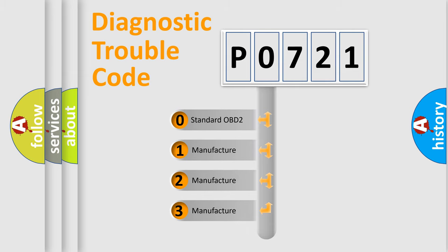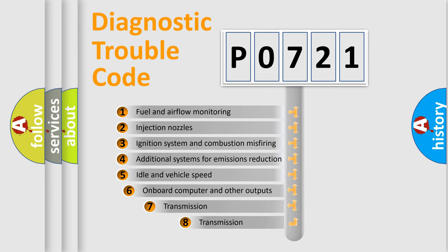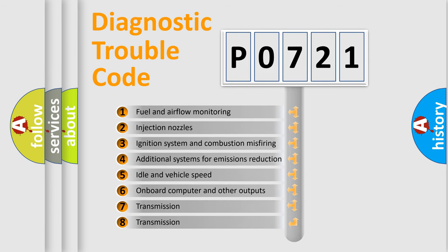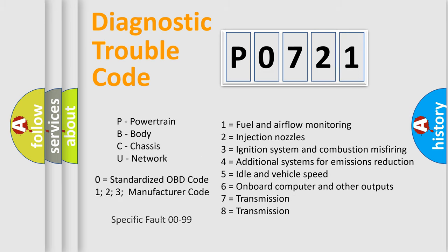If the second character is expressed as zero, it is a standardized error. In the case of numbers 1, 2, or 3, it is a manufacturer-specific error. The third character specifies a subset of errors. The distribution shown is valid only for the standardized DTC code. Only the last two characters define the specific fault of the group. Let's not forget that such a division is valid only if the second character code is expressed by the number zero.